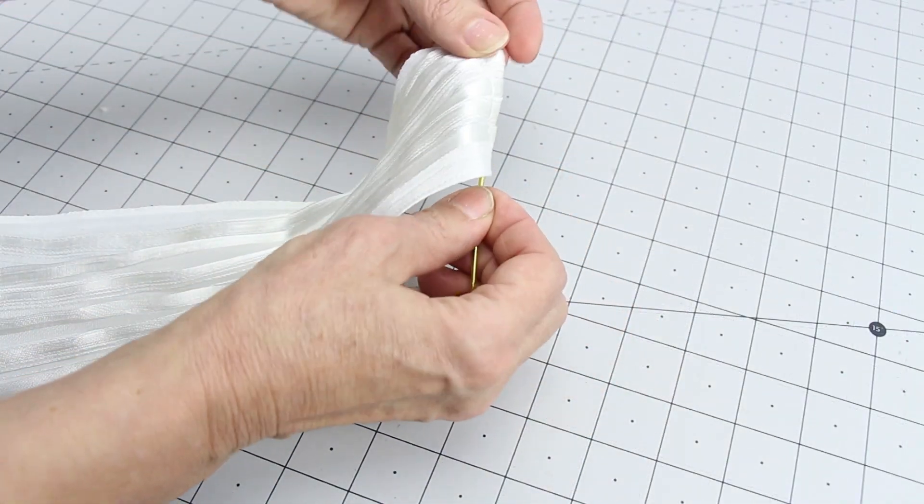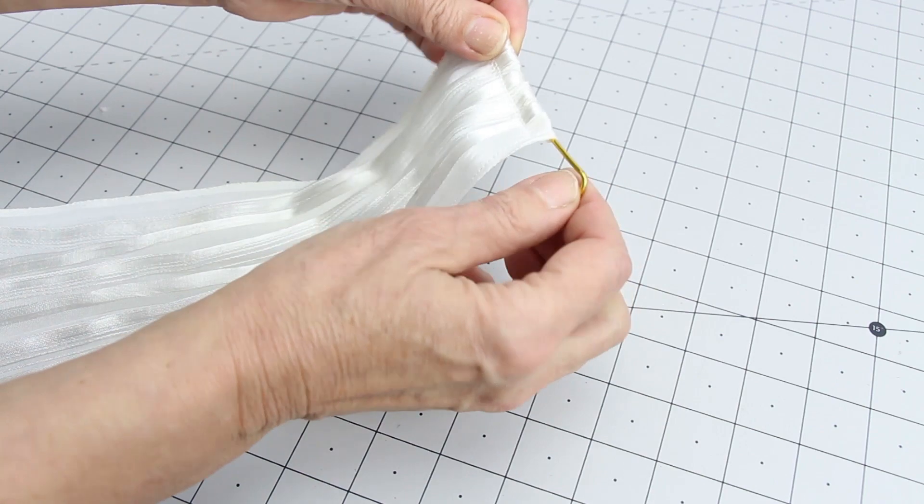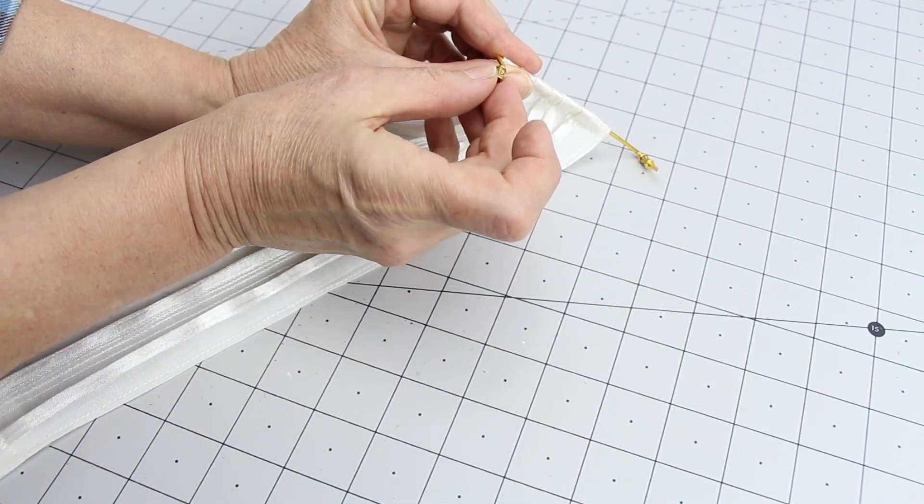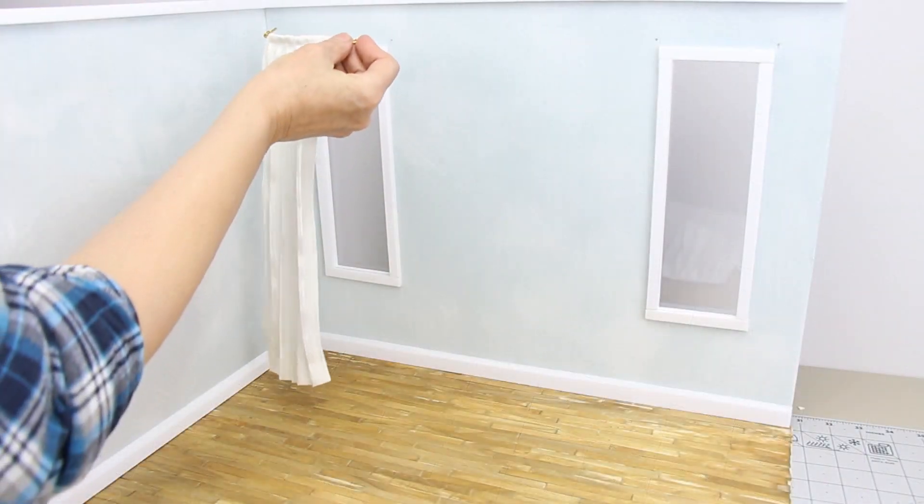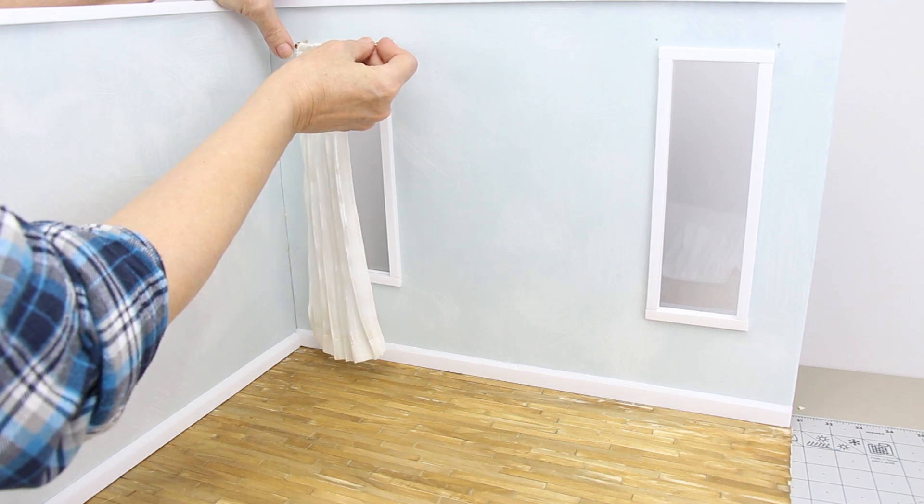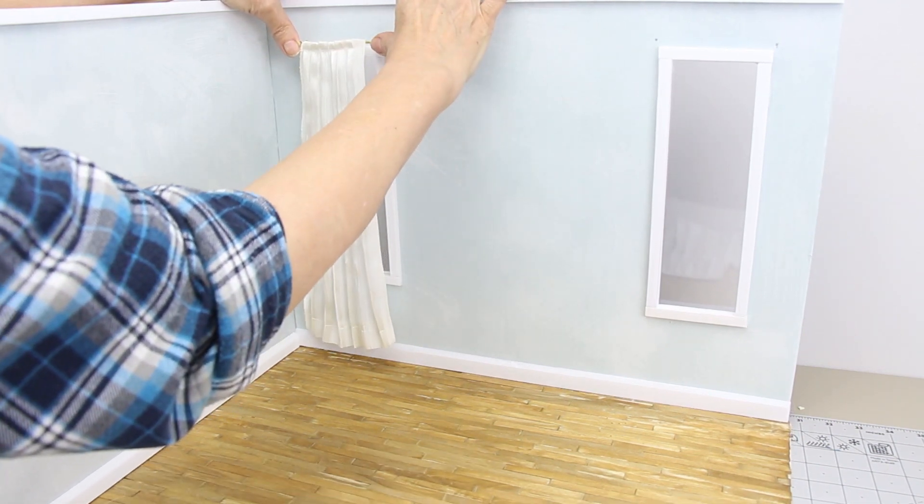String your curtains on the curtain rods. Put a bead at each end. Push the rod into the foam core board and glue on the back side.